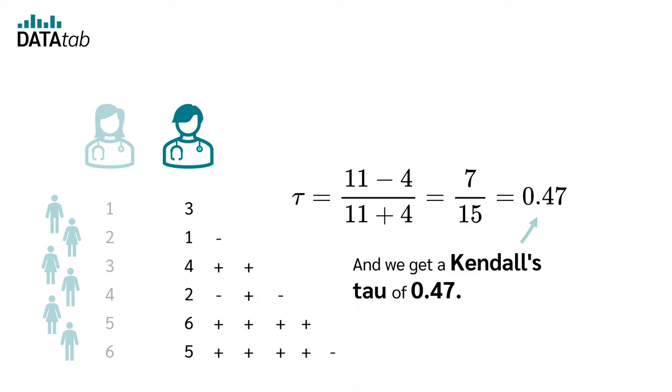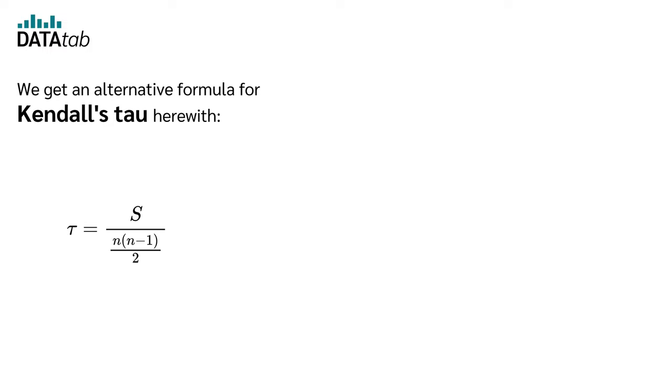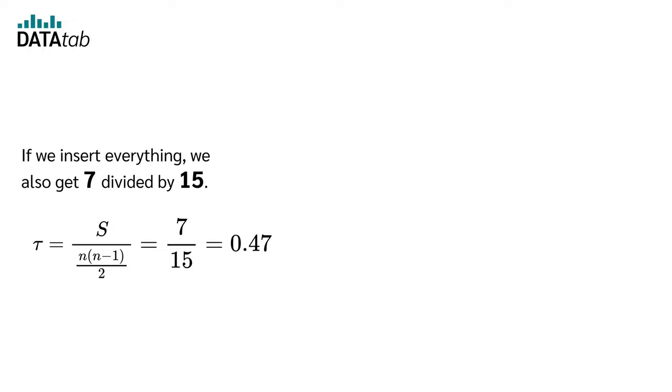We get an alternative formula for Kendall's Tau herewith. S is C minus D, therefore seven. N is the number of cases, i.e. six. If we insert everything, we also get seven divided by fifteen.